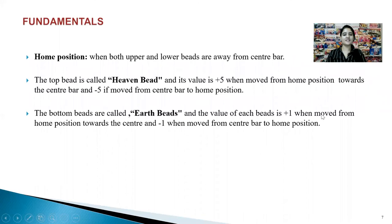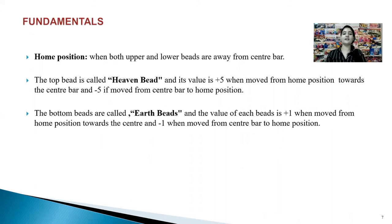There are some ABCDs of Abacus that I'm going to cover in the next few slides. Let's start with the fundamentals. The home position is when the upper beads and lower beads are away from the beam or the center bar. The top beads are called heaven beads and have a value of plus five when moved towards the center bar and minus five when moved away from it. The bottom beads are called earth beads and each has a value of one — plus one when moved towards the center bar, and minus one when moved away.